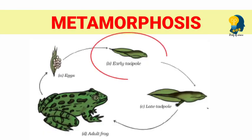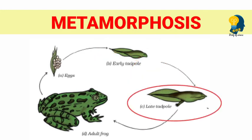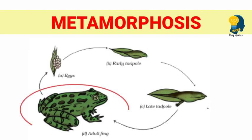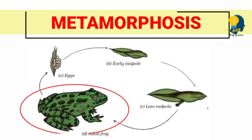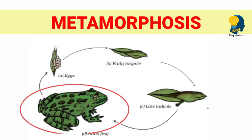These embryos develop to form the larval stage of the frog, which is called the tadpole. A tadpole has a tail and fin like fishes and swims in the water. As the tadpole grows into an adult, it loses its tail and fin. This process of transformation from a tadpole to an adult frog is called metamorphosis.